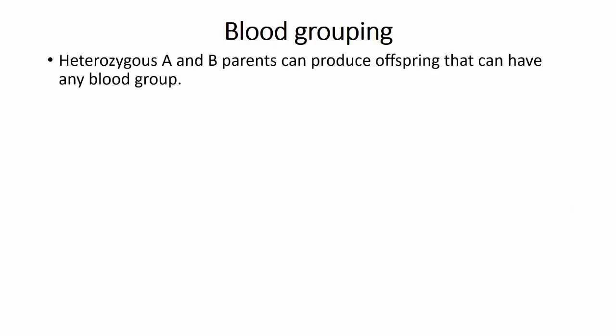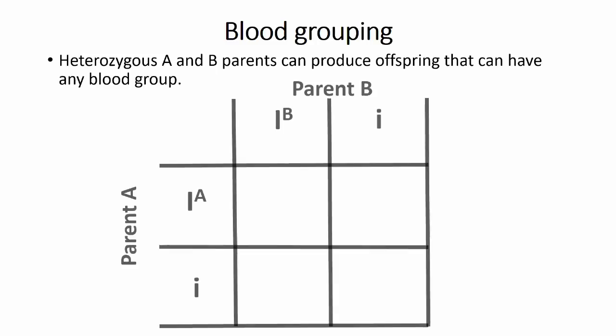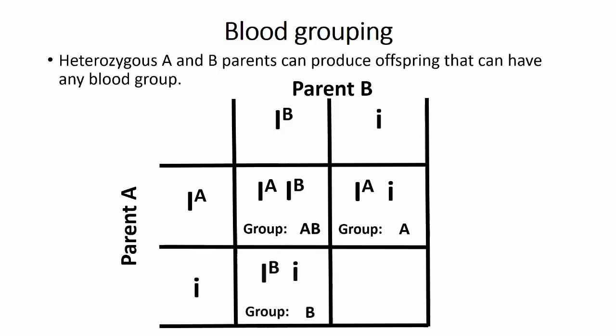Blood group inheritance works the same way as eye colour, with one parent passing down one of their two alleles. In this example, the parents will have heterozygous genotypes capital Ia, little i and capital Ib, little i. These parents will produce children that could have any of the four blood group phenotypes: AB, A, B, and the homozygous O.